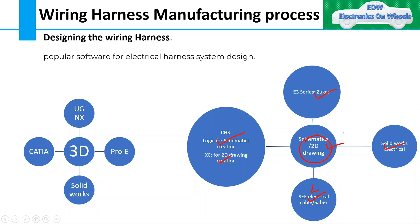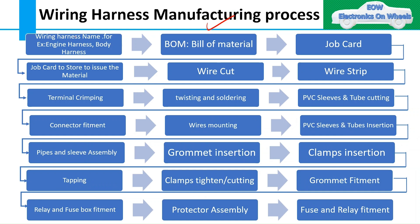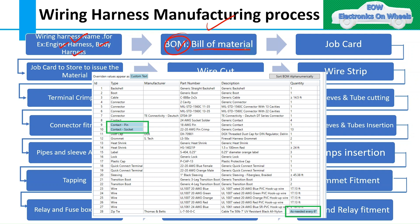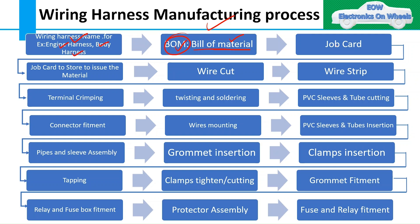Now we will see what steps are performed by the supplier to build the harness. When the 2D drawing comes to the supplier, they first check the name of the wiring harness — like which harness it is: engine harness, body harness, and so on. Then they get the BOM — bill of material — for that particular harness. The bill of material contains information about how many wires with their lengths, wire CSA, and so on. Once you have the BOM, a job card is issued to build the harness and to issue material from the store. Sometimes a particular wire color or connector series is not available in the store, and in that case an alternative solution is discussed with the customer. Once material is received from the store, the first step is wire cutting.